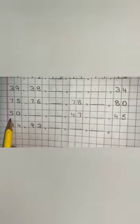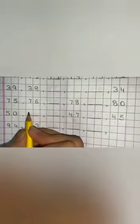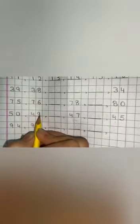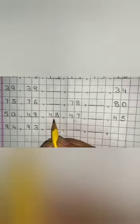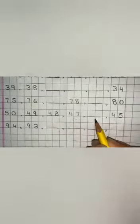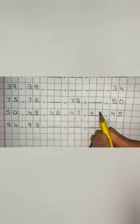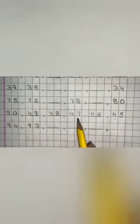So what will I write here? If it's written 50, what will I write here? 4, 9, 49. Then 4, 8, 48. 4, 7, 47. 4, 6, 46. And 4, 5, 45. So this is reverse counting.